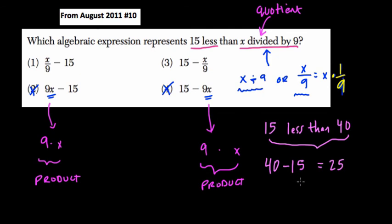So when you say 15 less than 40, 15 is being subtracted from 40. We're not doing 15 minus 40. That would give you negative 25, which is not what we're looking for here. So that gives you a sense that when you're answering this question, you want to pick choice 1 because that tells you 15 less than the quotient of x and 9 or x divided by 9. All right, hope this helped.